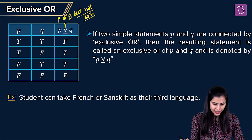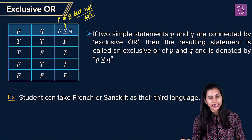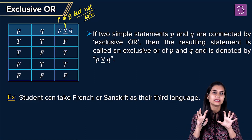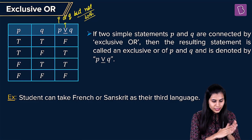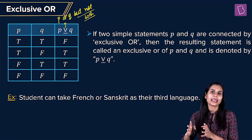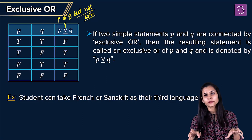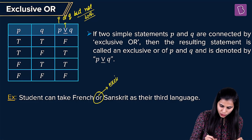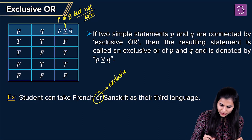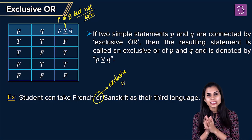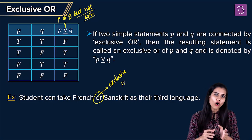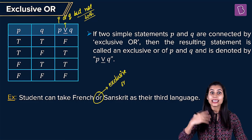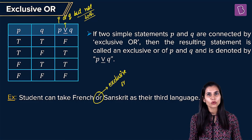Here is another example: 'A student can take French or Sanskrit as their third language.' This is a disjunction statement where the two sub-statements are 'a student can take French' and 'a student can take Sanskrit as their third language,' combining with OR. But here, OR is exclusive OR — because as a third language, you can take French or Sanskrit, but you cannot take both. This is how exclusive OR statements look.